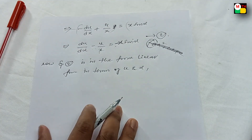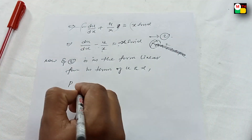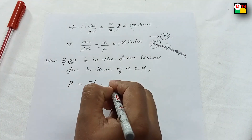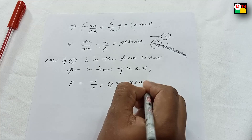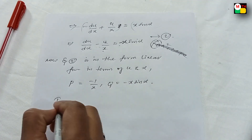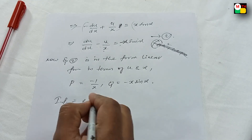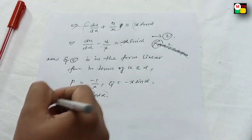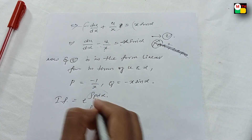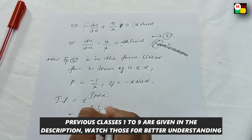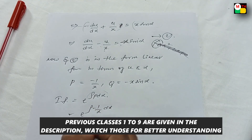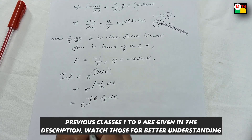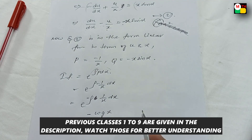Final step 5. Identify P — P identify P. So integrating factor. Integrating factor equals e power integral of P dx — formula. Integral P dx. So integral of P: minus 1/x dx. Then e power integral of minus 1/x dx. That is e power minus integral of 1/x dx. That is e power minus log x.